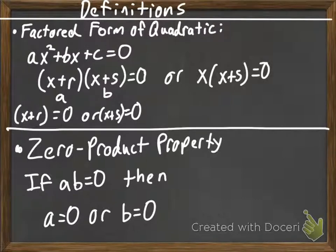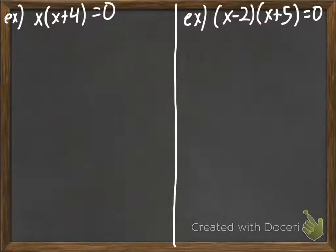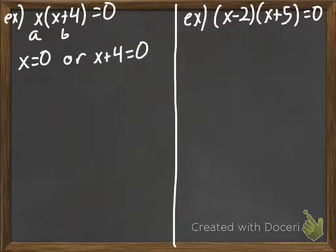So, let's go ahead and work through an example. The first example here I have is x times x plus 4 equals 0. If I say that this is a and this is b, I'm going to say that x equals 0, or x plus 4 equals 0.